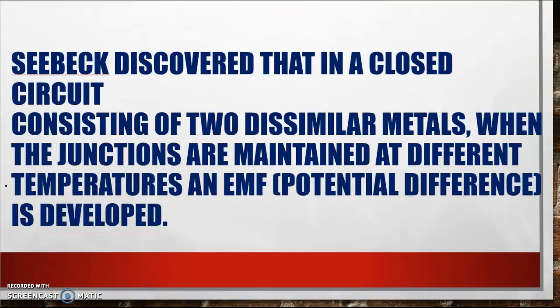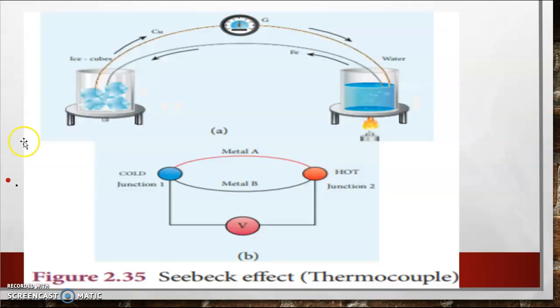Seebeck discovered that in a closed circuit consisting of two dissimilar metals, when the junctions are maintained at different temperatures, an EMF — which is nothing but a potential difference — is developed. As suggested by Seebeck, the two metals, copper and iron, are maintained at two different temperatures. Temperature at point A is that of an ice cube and at point B the water is heated, so there is a temperature difference between points A and B. Due to this temperature difference, an EMF is developed. This is called Seebeck's effect.